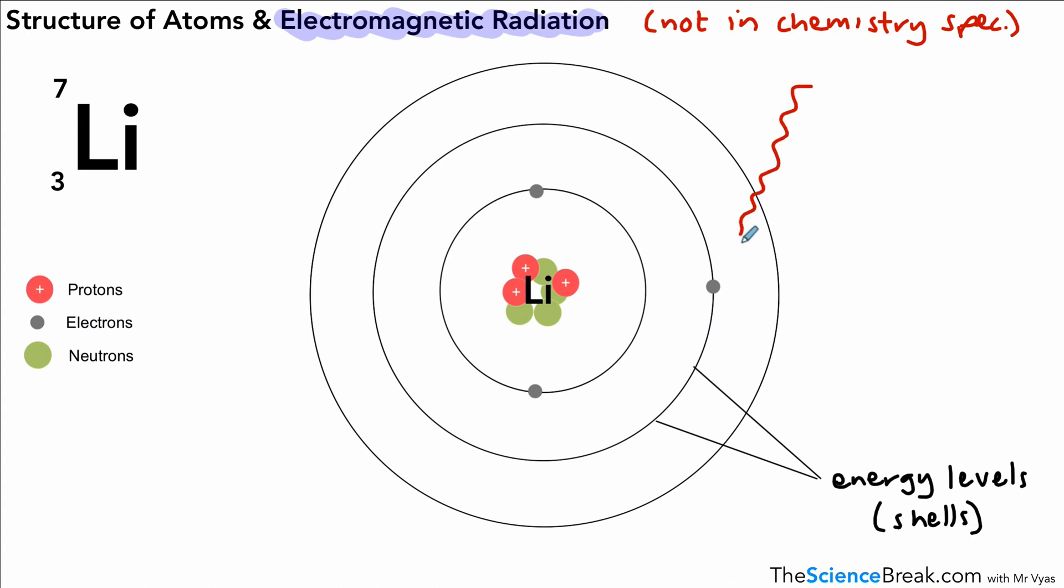And what can happen is that electrons in those energy levels can absorb electromagnetic radiation. So here we have some electromagnetic radiation hitting that electron. That electromagnetic radiation can be absorbed. The electron will gain energy and it can move to a higher energy level. So this electron, as you can see, has moved to a higher energy level. And by higher, we mean further away from the nucleus. Energy levels are higher the further you go away from the nucleus.